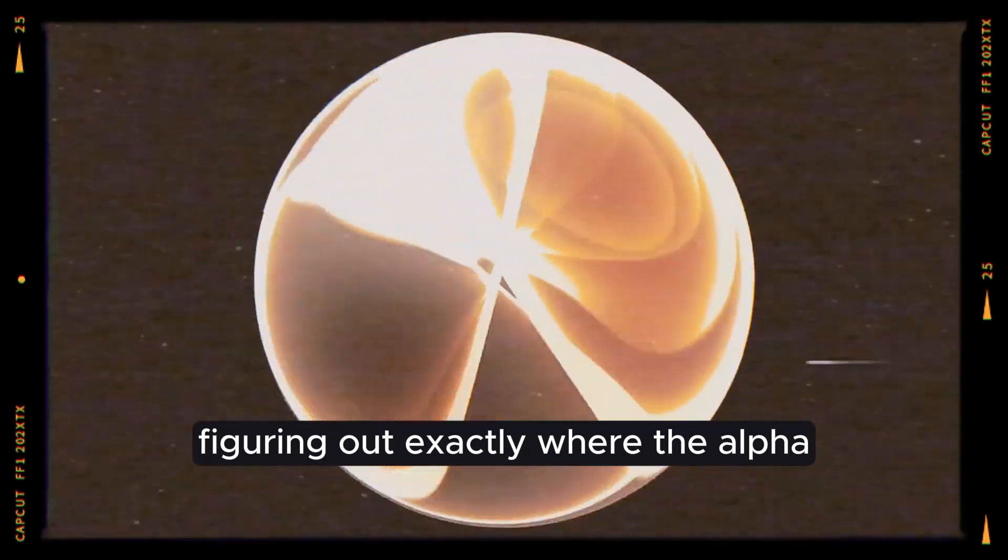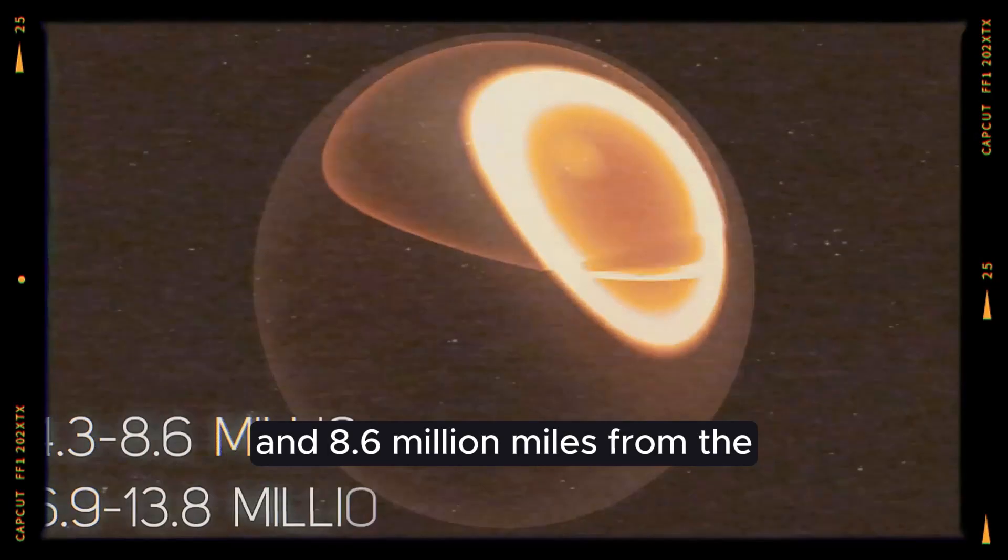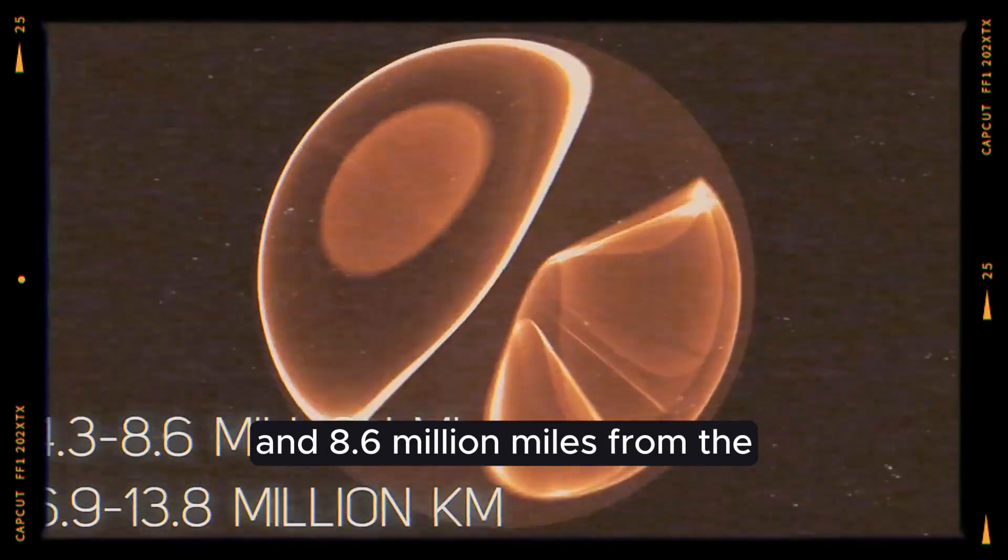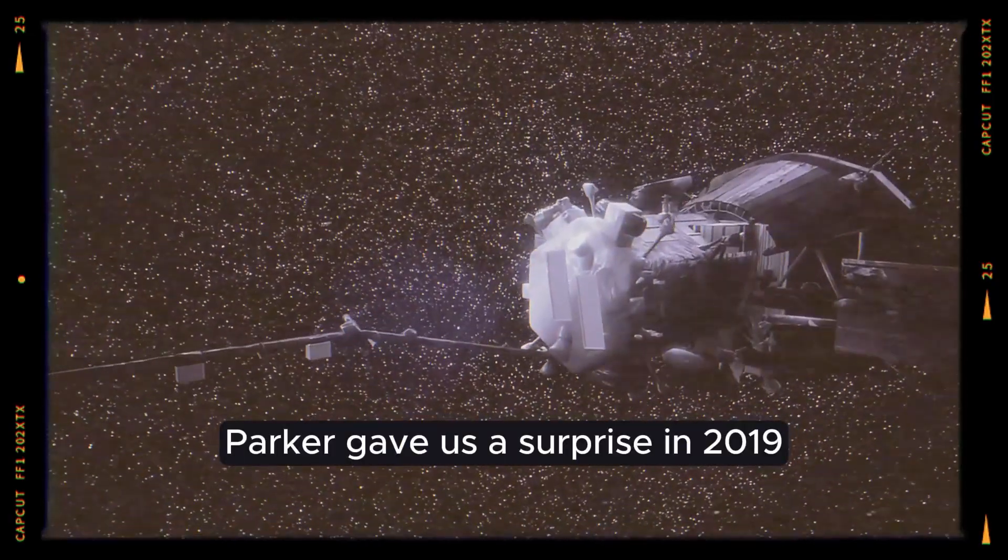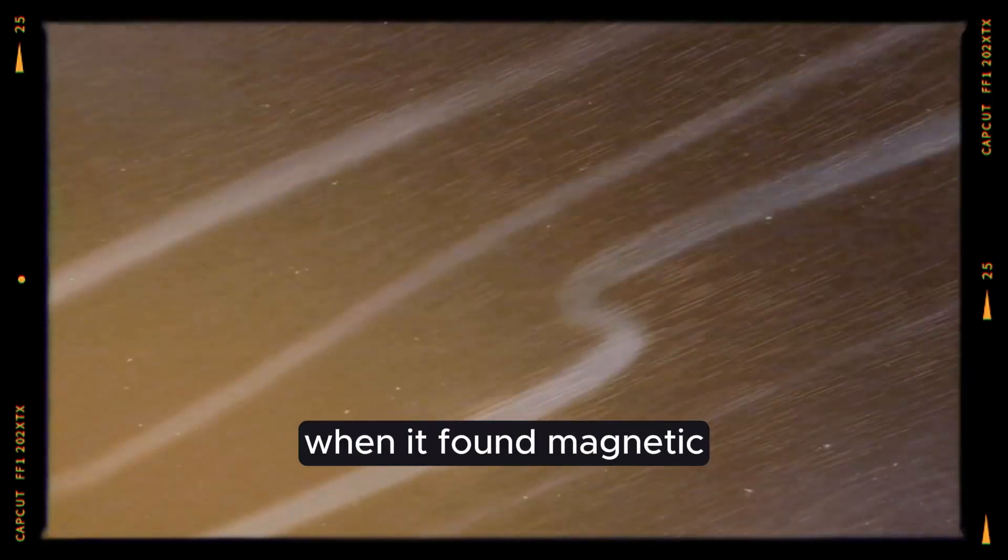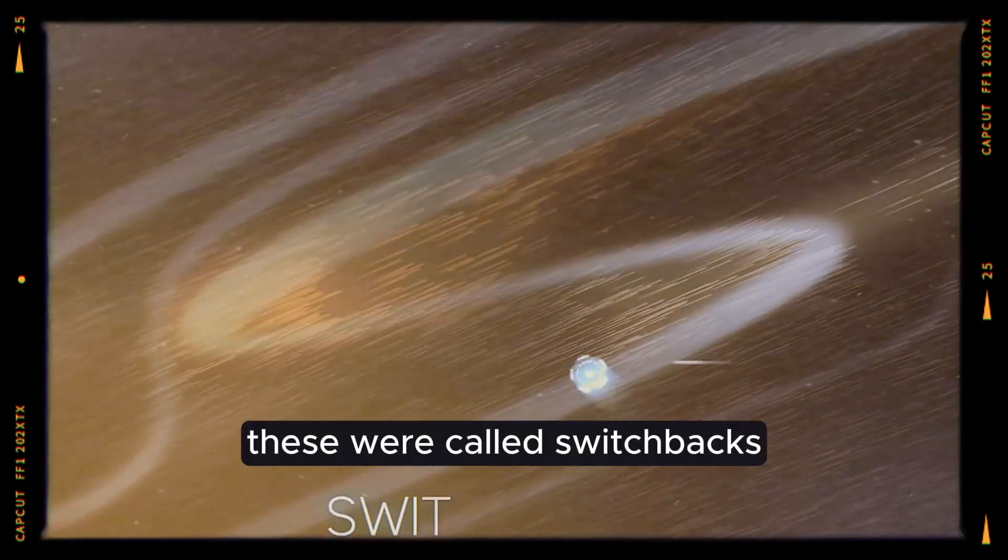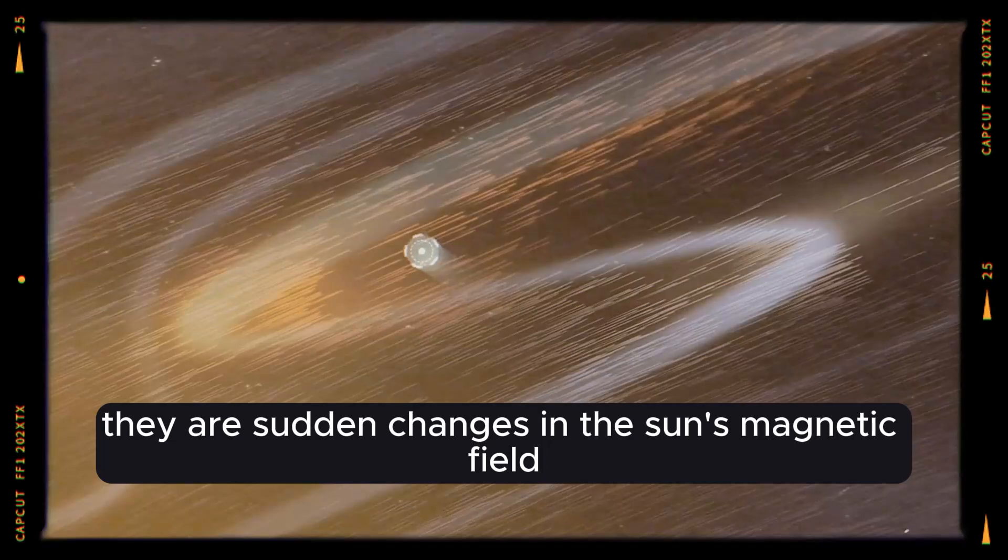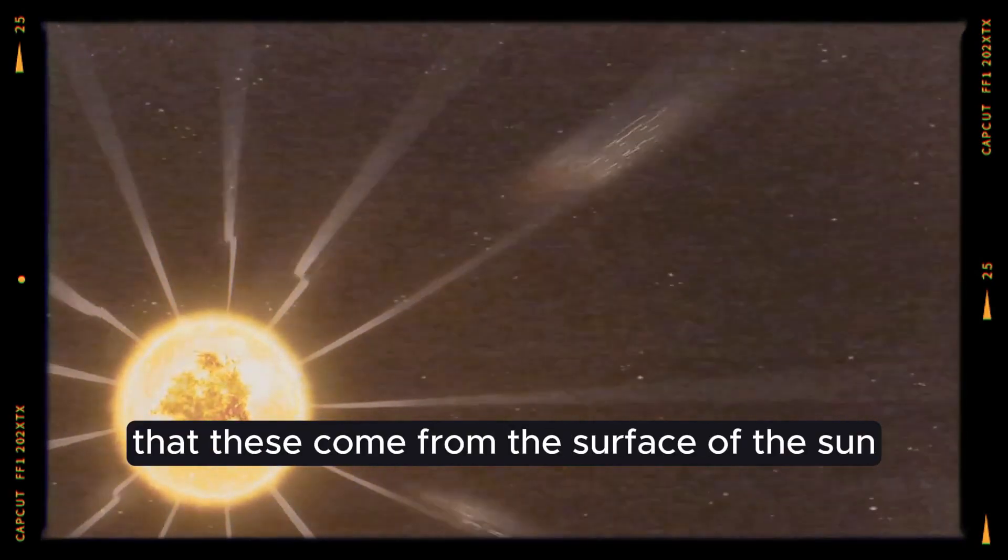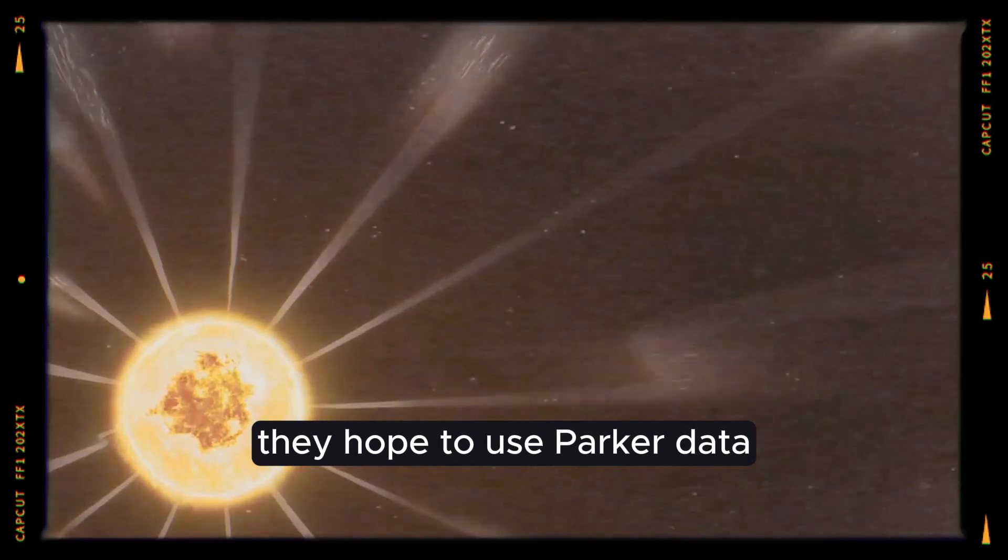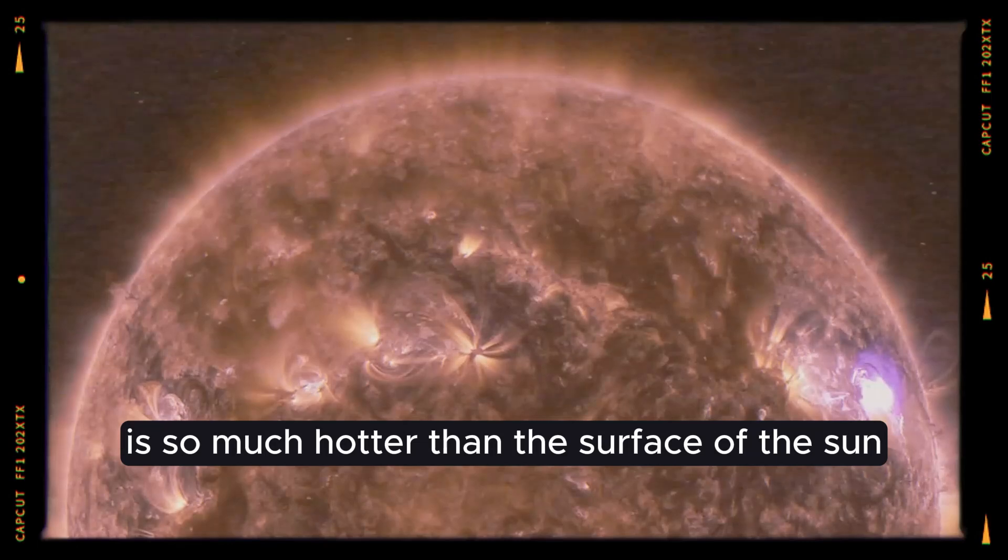Figuring out exactly where the alpha and critical surfaces are would disprove estimates that they are between 4.3 and 8.6 million miles from the sun's so-called surface. Before they even got to the sun, Parker gave us a surprise in 2019 when it found magnetic zigzag patterns in the solar wind. These were called switchbacks, sudden changes in the sun's magnetic field. So far, scientists have found that these come from the surface of the sun. They hope to use Parker data to figure out how switchbacks form and even why the corona is so much hotter than the surface of the sun.